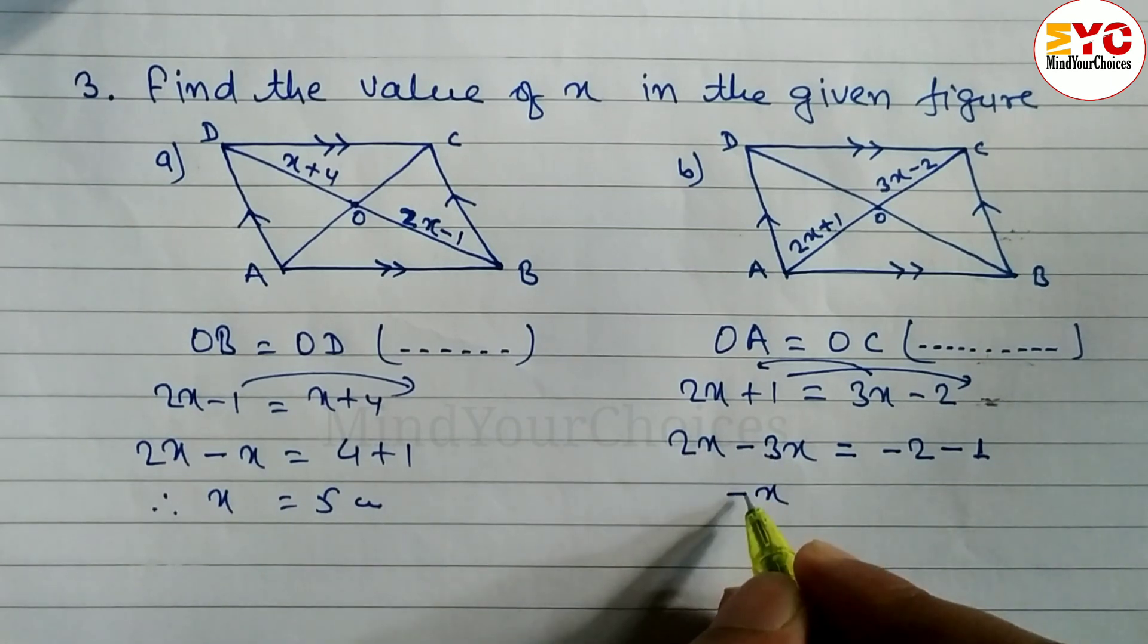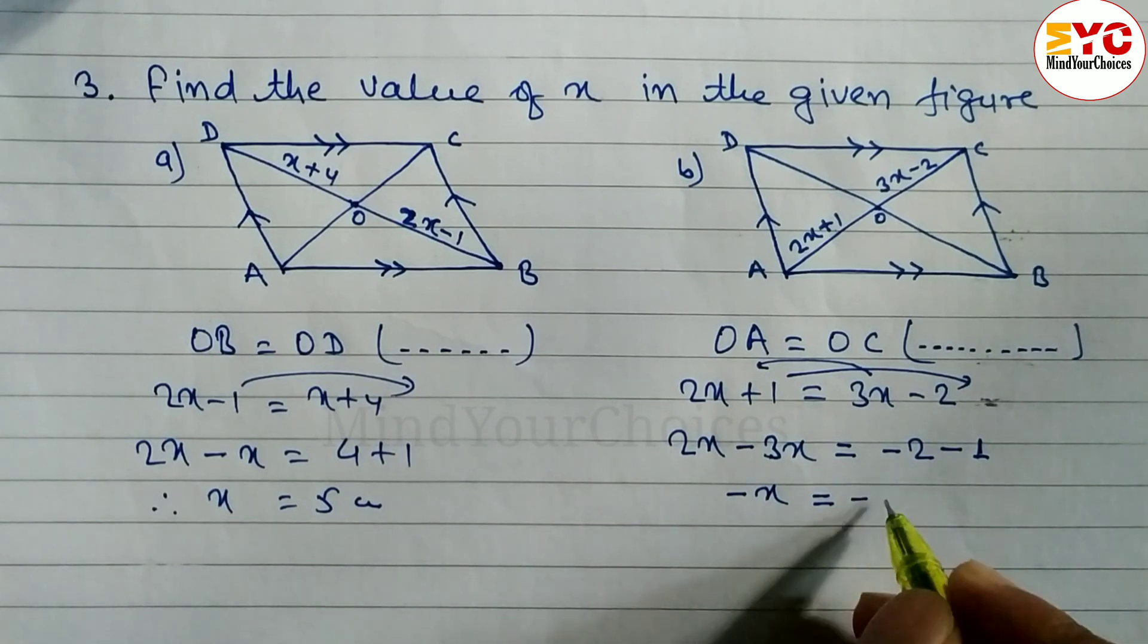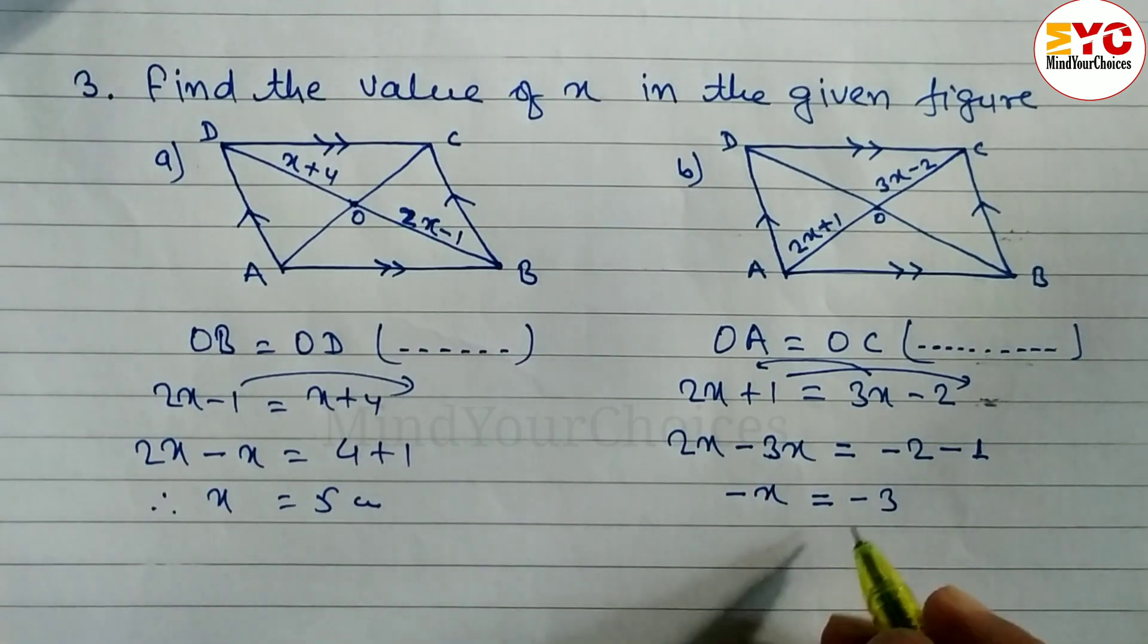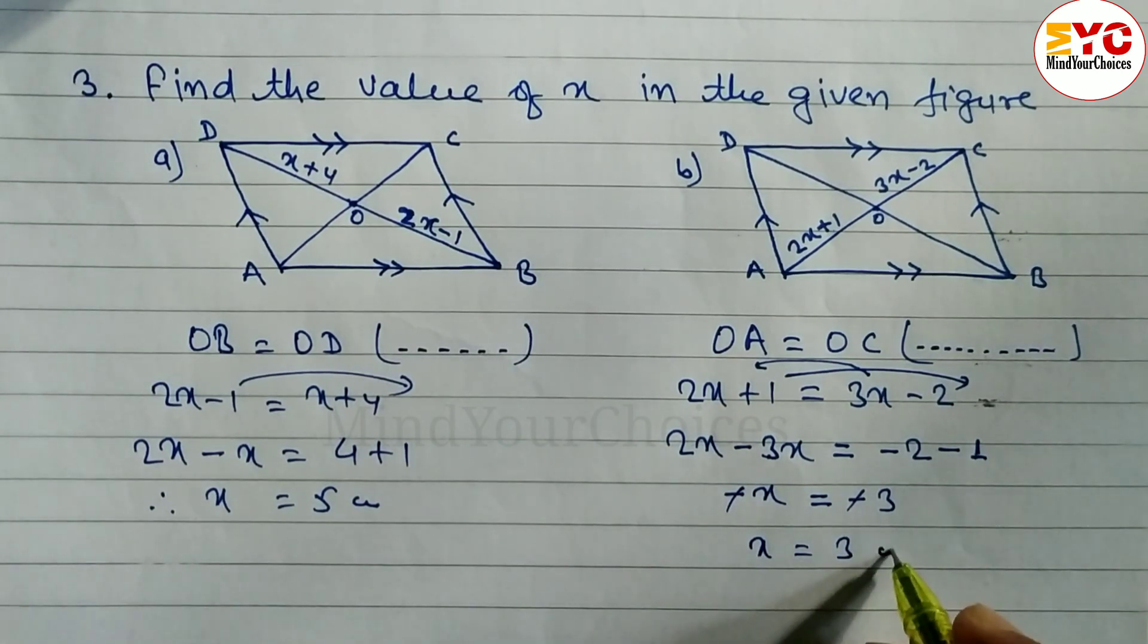3 minus 2 means 1. 1 no need to write, just write down X. Is equal to minus 2 minus 1. We get minus 3. Minus minus cancel. So X is equal to 3 is the answer.